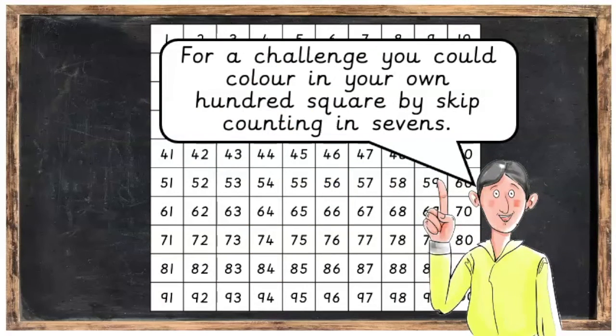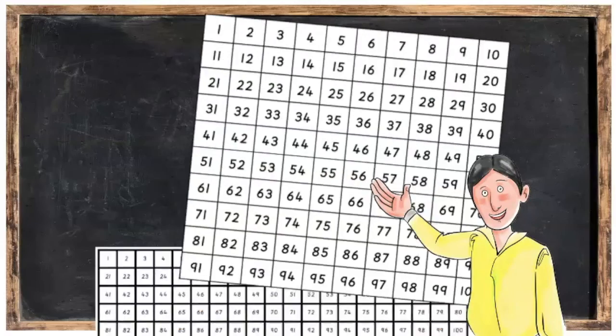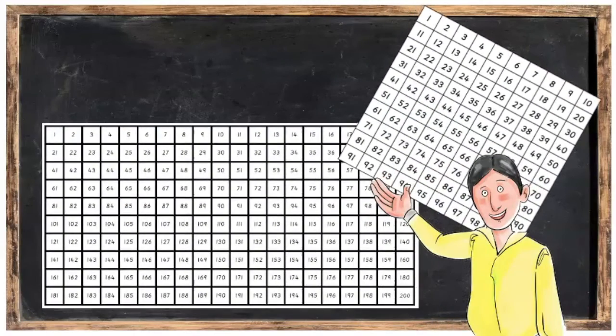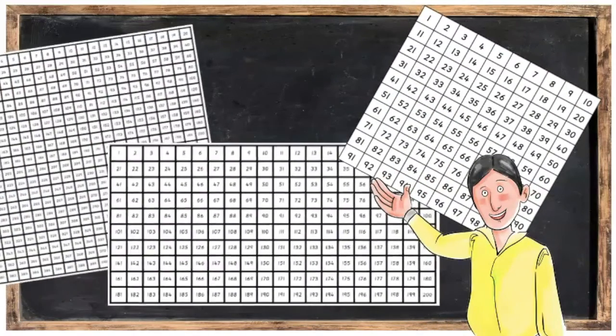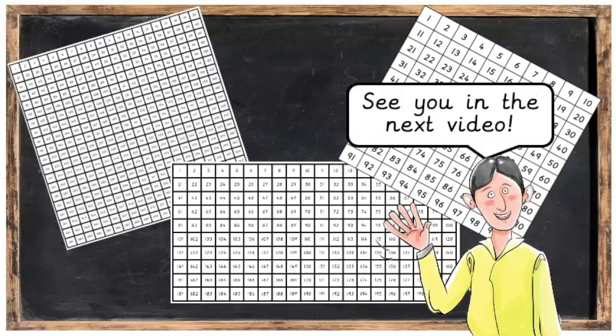For a challenge, you could color in your own hundred square by skip counting in sevens. You might even like to skip count in sevens up to 200, or even for a greater challenge, up to 400. See you in the next video!